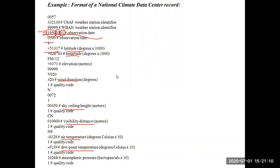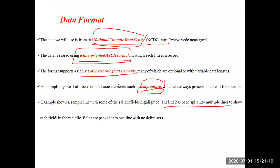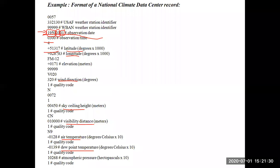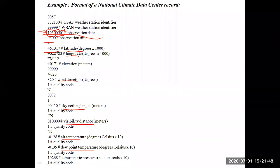All of this has been divided into multiple parts for us to understand how it will look like, but actually it is a single line only. As I told you, the weather data is in a line-oriented ASCII format. It will be available as a single line, but for our convenience we divided that one line into sub-lines to see what its various parts are.